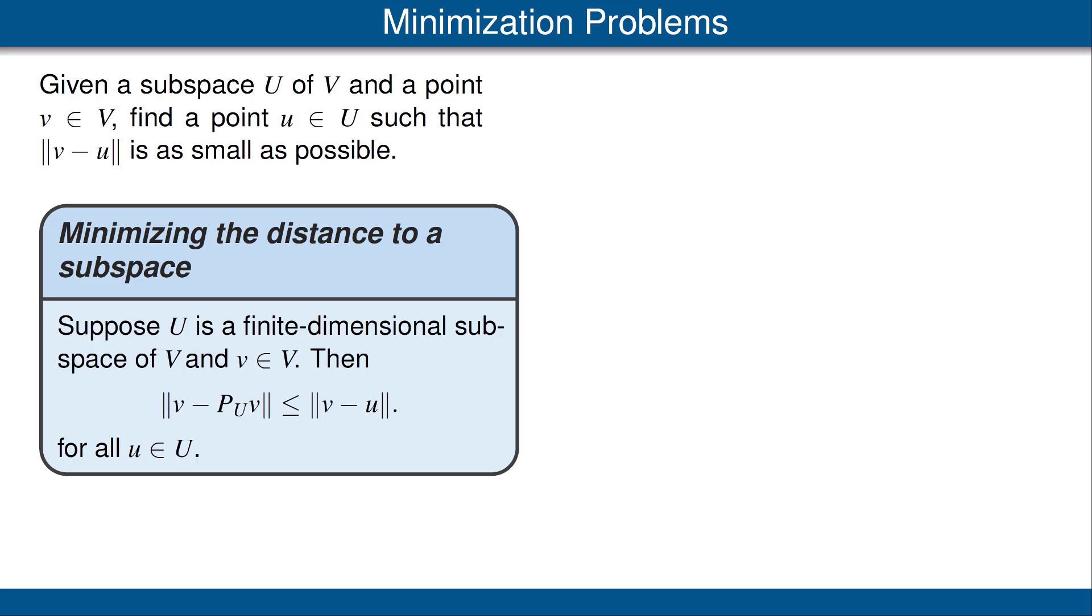Suppose U is a finite dimensional subspace of V, and v is a point in V. Our result states that the norm of v minus the orthogonal projection of U applied to v is less than or equal to the norm of v minus u for every vector u in U.